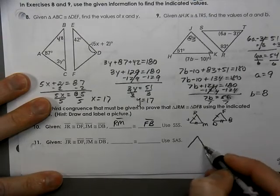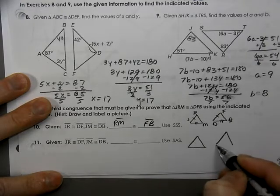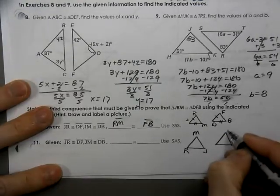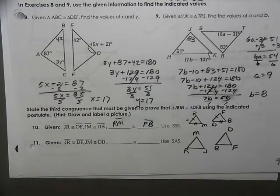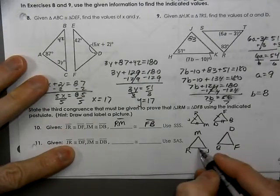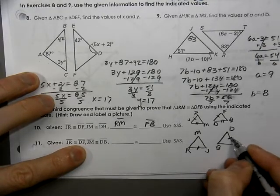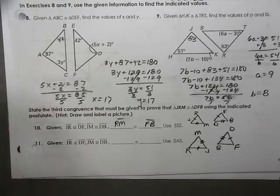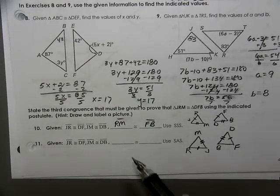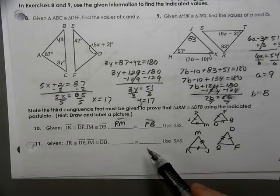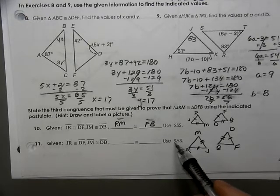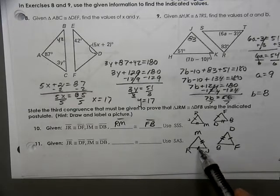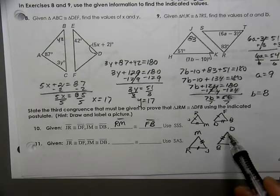Similarly, we'll draw the triangles named in a different order: JRM and DBF. JR is here, DF is there. JM has a different number of tick marks with DB. In this case, we're trying to figure out what missing information we need to prove it by SAS. Notice the A is in between the S's — that's called the included angle. So we need the angle in between our two sides. If these are our two sides, we need angle J congruent to angle D.